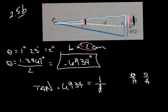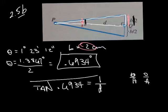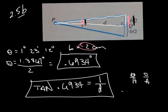I write this as tangent of 0.6934 equals 1 over d, where d is the adjacent side. Using my calculator, I get d equal to 82.6341 centimeters. That's how long d is based on that information.